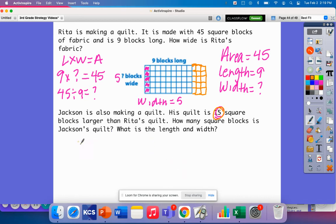Now I want to know how many square blocks is Jackson's quilt? What is the length and width? Let's just do length times width and that will tell us the area. The length up here was 9 blocks. This was the 9. So now I've got 3. So 9 plus 3, that would give me 12.